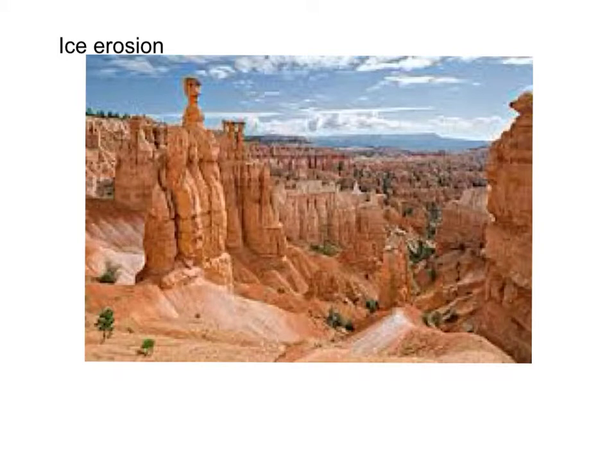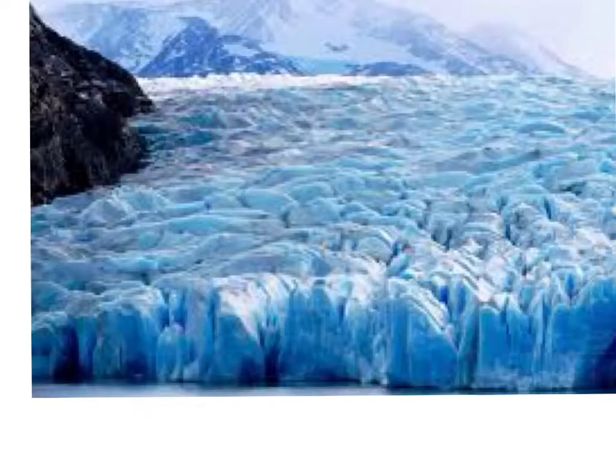Ice Erosion. When it rains or snow melts, water gets into the cracks of a rock. When the water freezes, it expands, causing it to push the crack open a little farther each time. A large piece of ice that never melts, or a glacier, can scrape past a rock and take chunks of the rock with it.